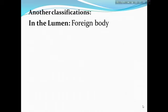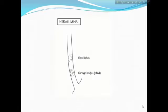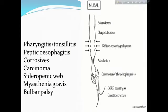Another classification: in the lumen — foreign body and/or food bolus. Mural causes include scleroderma, Chagas disease, pharyngeus tonsillitis, diffuse esophageal spasm, achalasia, carcinoma esophagus, gastroesophageal reflux disease scarring, and chemical stricture.